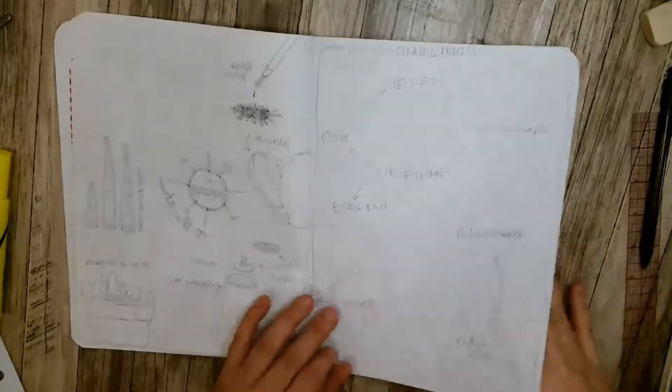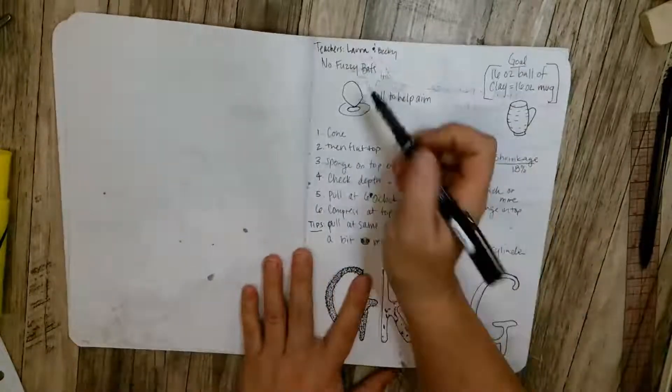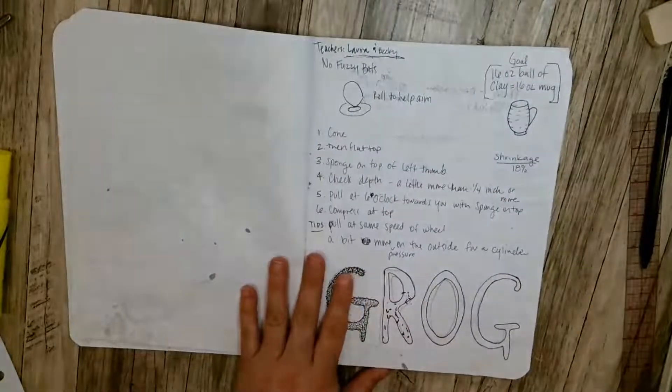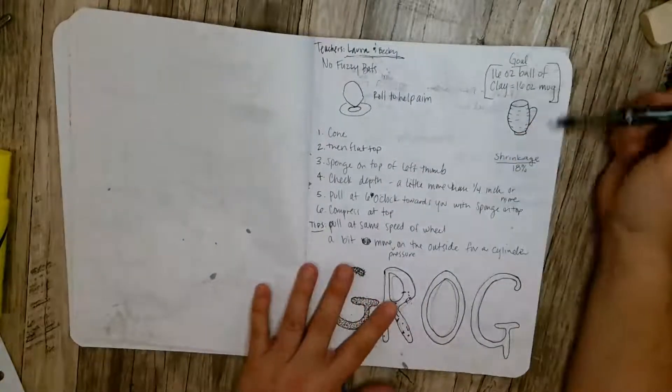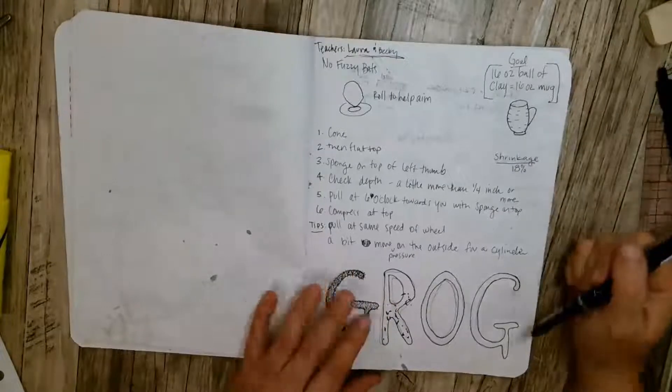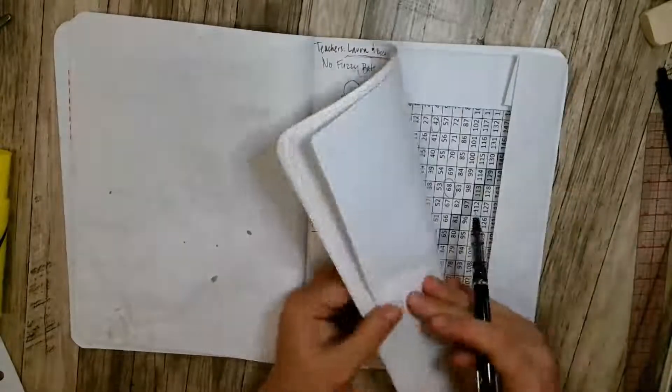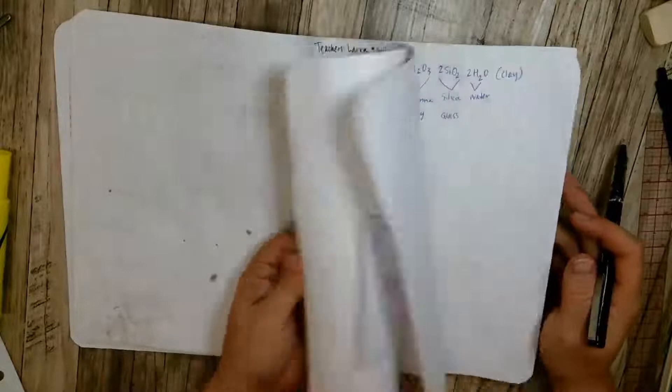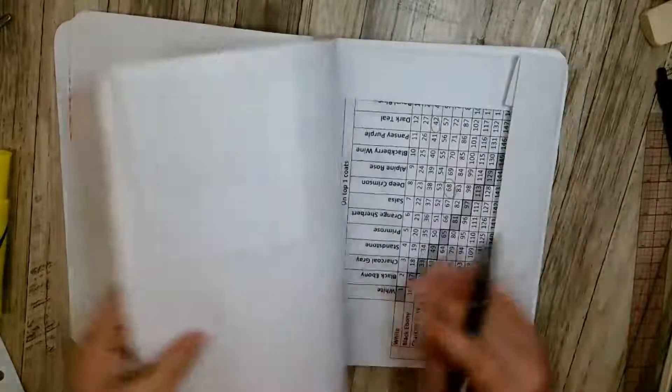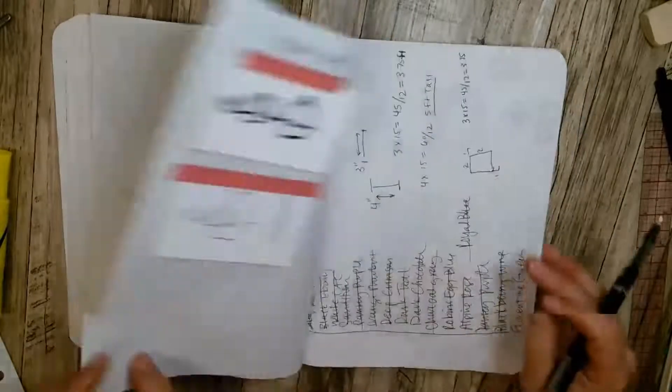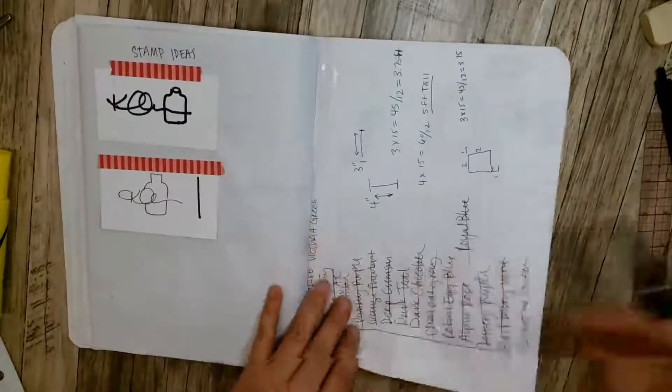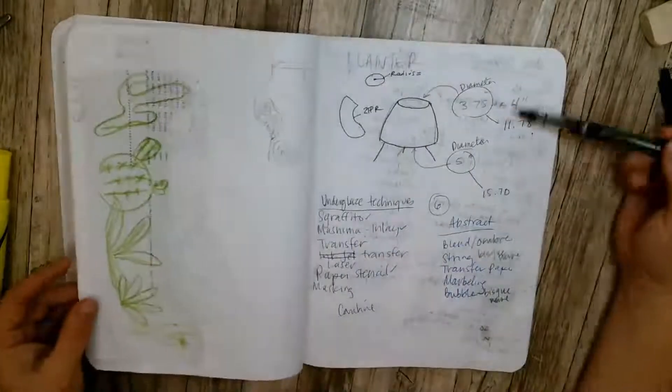This is notes that I learned from Laura and Becky down at Bruning. I have some drawings and some information. You can see that I have a lot of different things in here. You can tape these pieces of paper in. You can make lists. You can put measurements.